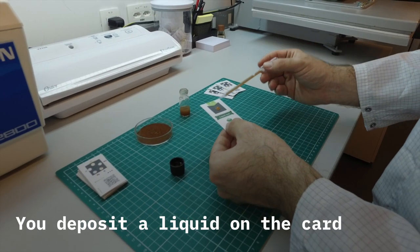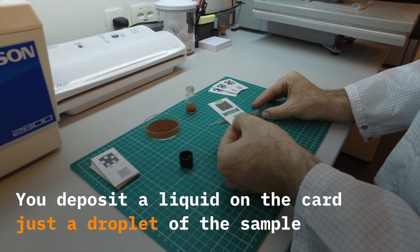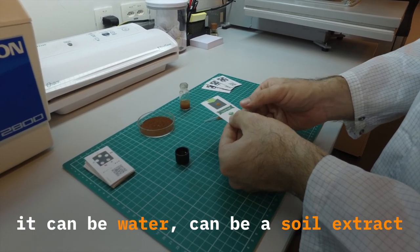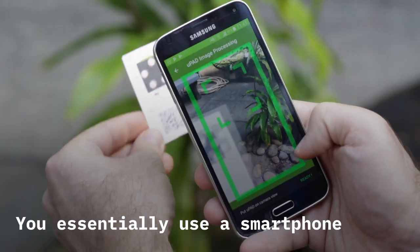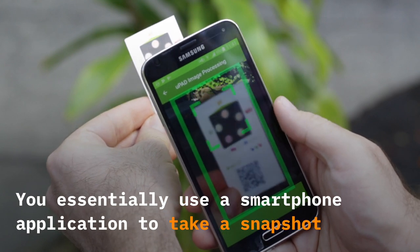You deposit a liquid on the card, just a droplet of the sample. It can be water, it can be a soil extract, and then you flip the card around. You use a smartphone application to take a snapshot.